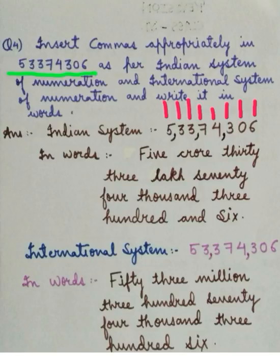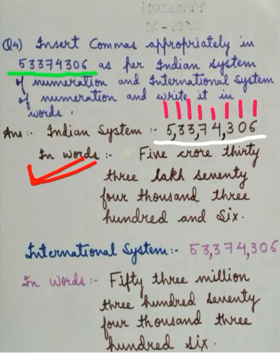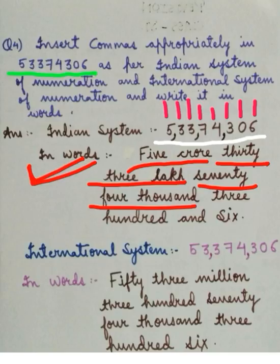Here we have put commas like this — please have a look at it. Now let's write the given number in words according to the Indian system of numeration. It is five crore, thirty-three lakh, seventy-four thousand, three hundred and six.